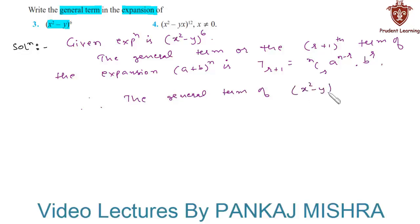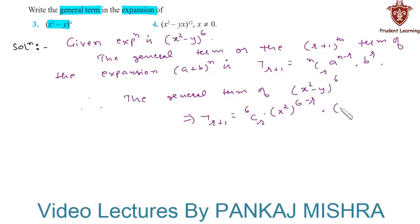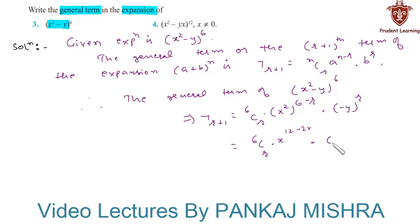Therefore, the general term of (x² - y)⁶ would be T(r+1) = 6Cr × (x²)^(6-r) × (-y)^r. This equals 6Cr × x^(12-2r) × (-1)^r × y^r.